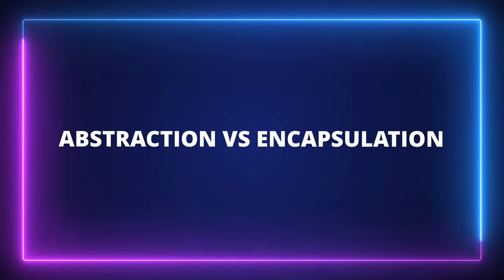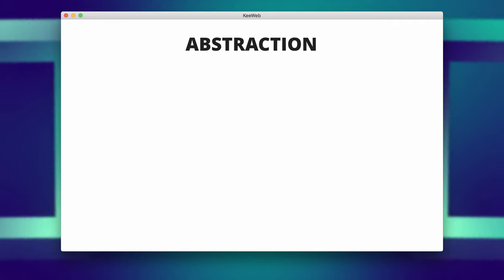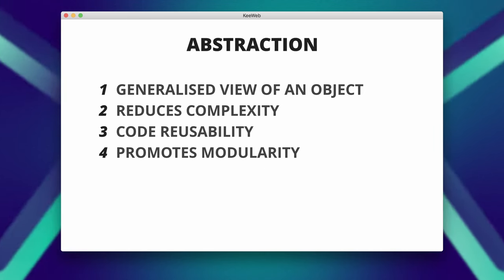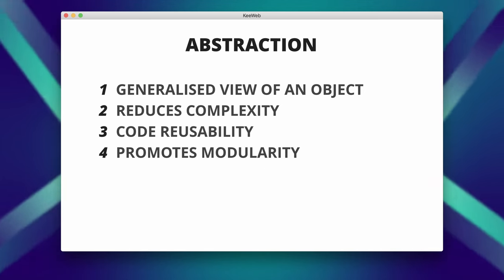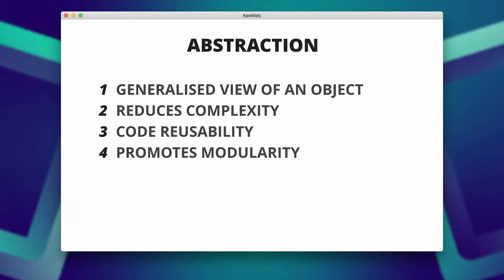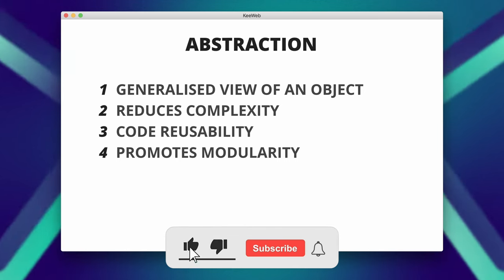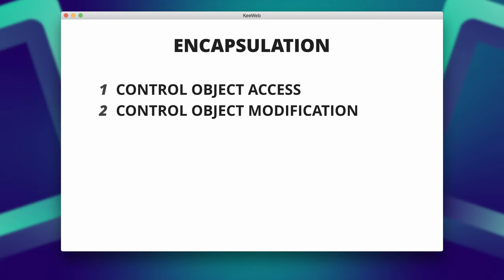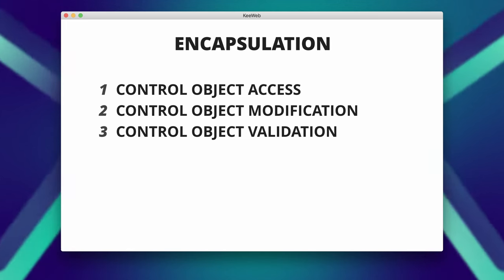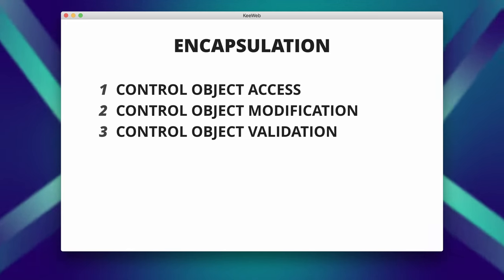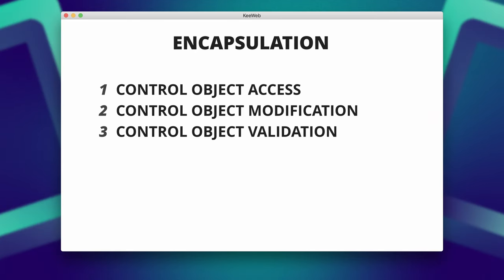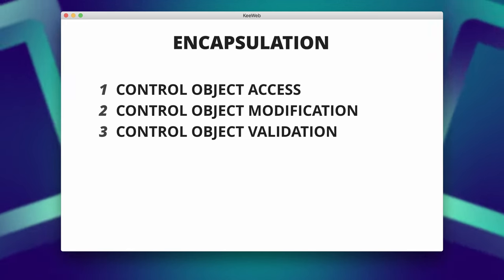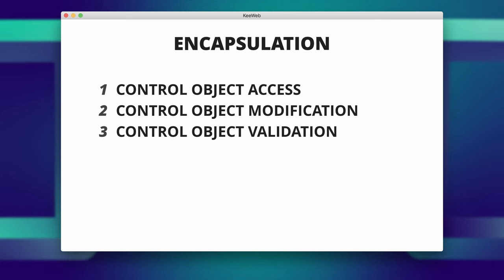Explain the difference between abstraction and encapsulation. The main purpose of abstraction is to provide a simplified and generalized view of an object or system, making it easier to understand, manage, and modify. It helps in reducing complexity, improving code reusability, and promoting a modular design. By encapsulating data within a class, we can control how it is accessed, modified, and validated. This helps in maintaining data integrity, enforcing business rules, and preventing unauthorized access. Encapsulation also allows the internal implementation of an object to change without affecting other parts of the program that use the object, as long as the interface remains unchanged.